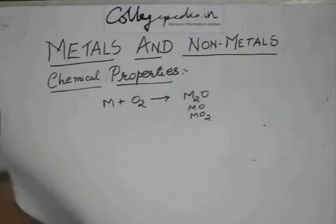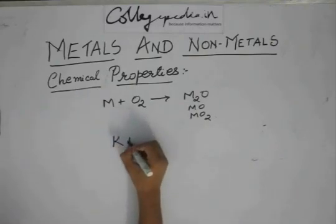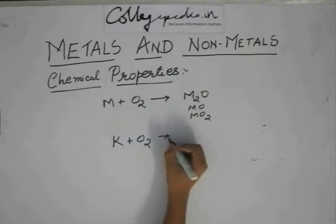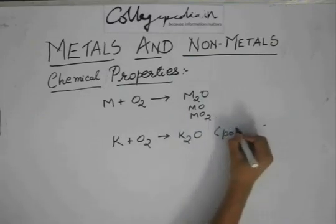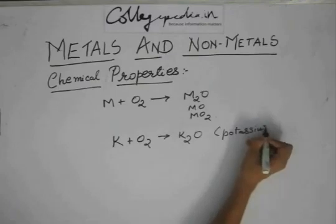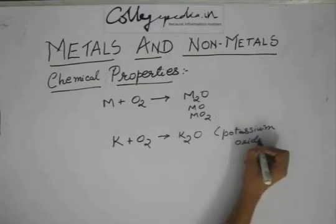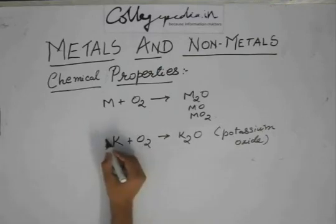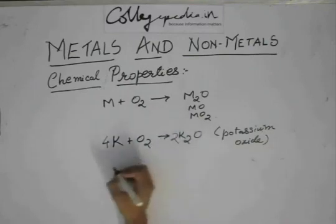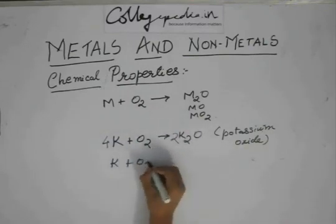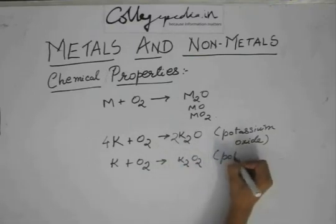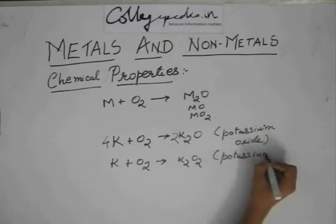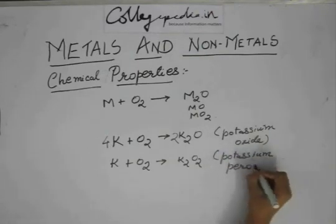If you have potassium reacting with O2, it forms K2O, which is potassium oxide, or it can form potassium peroxide.